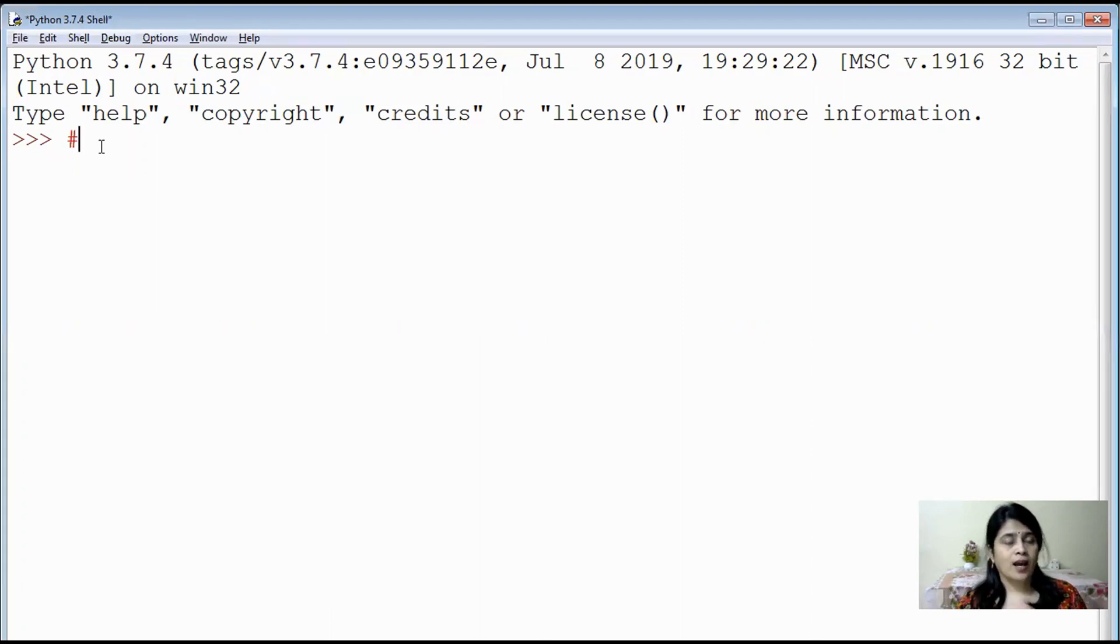First, we are starting with a comment. As we already know that Python programs have some components, always when we are writing a program, we should start with a comment. By looking at the comment, the user will know what the program is about. So I am writing here: program to obtain three numbers and find their sum. This is the comment.